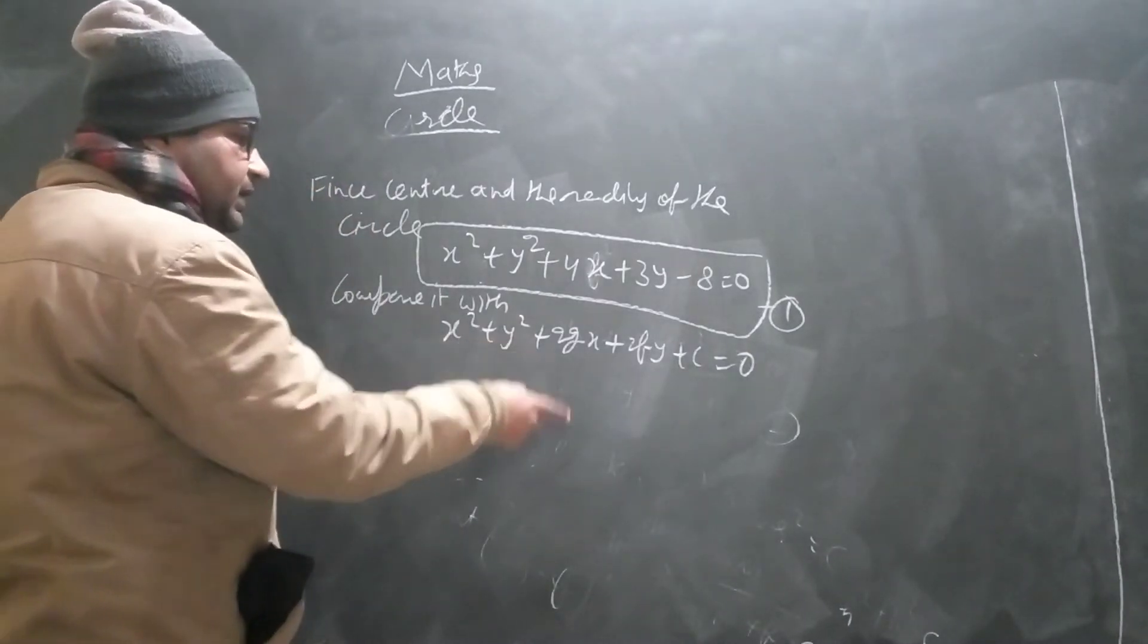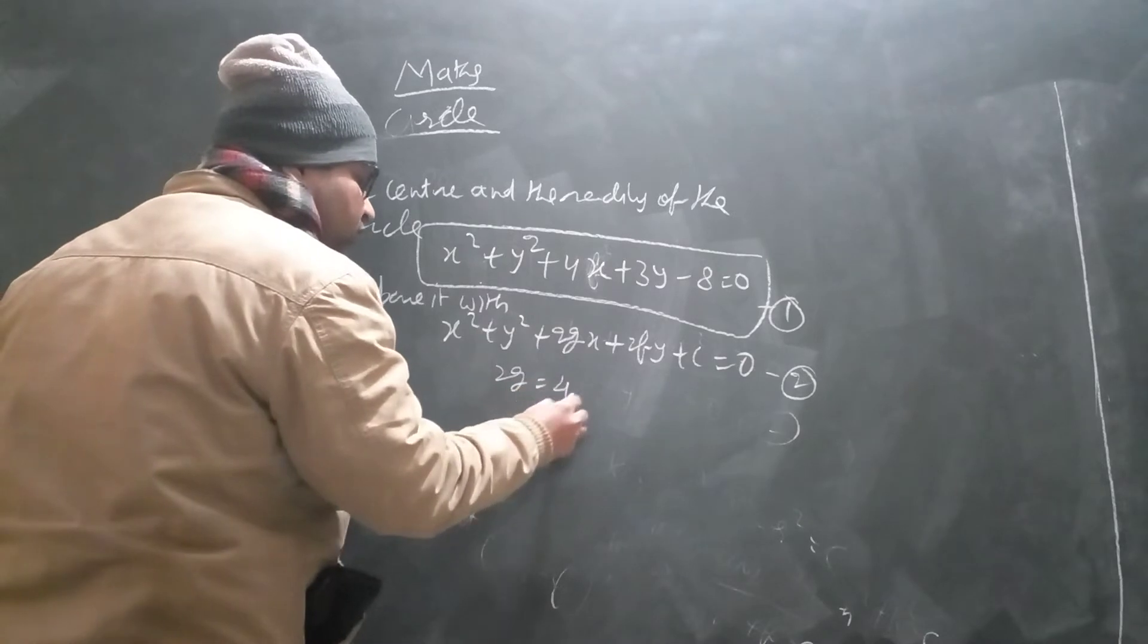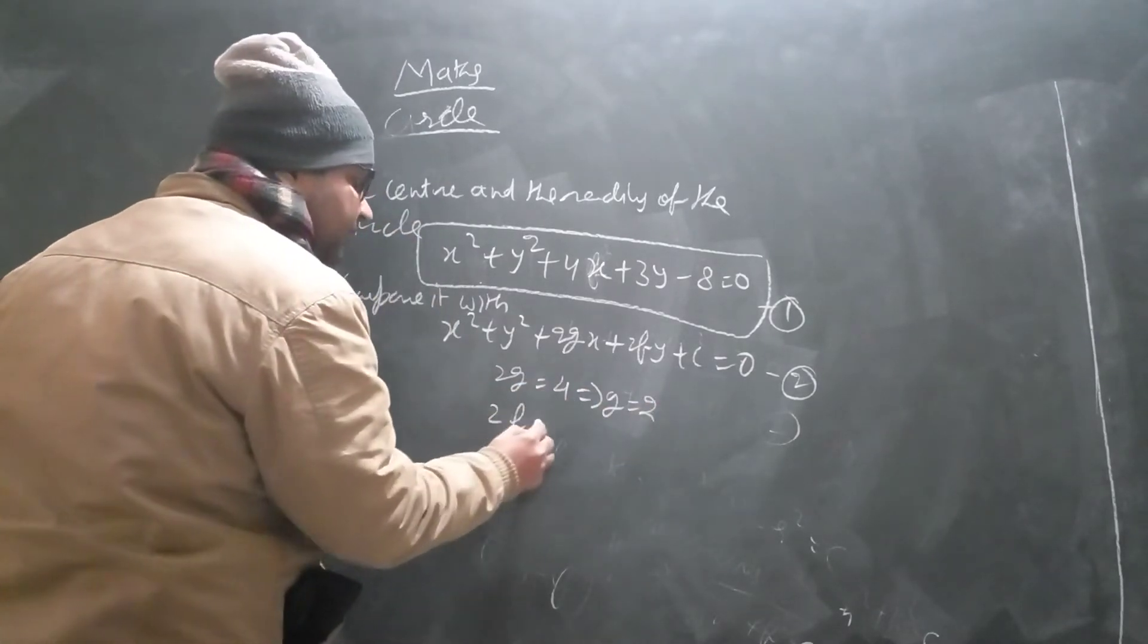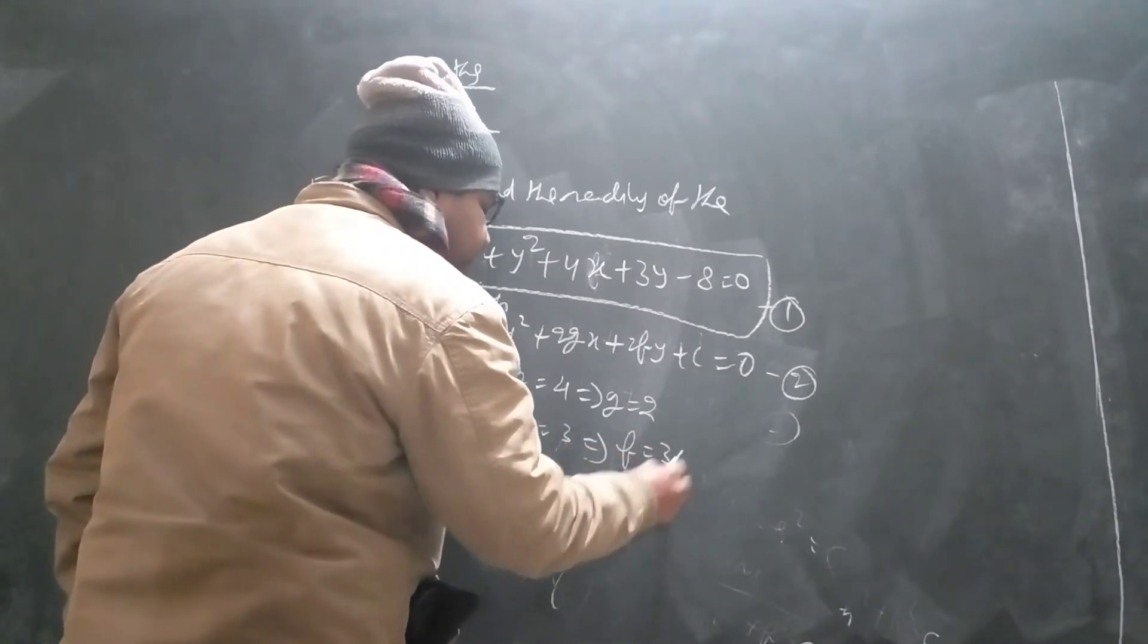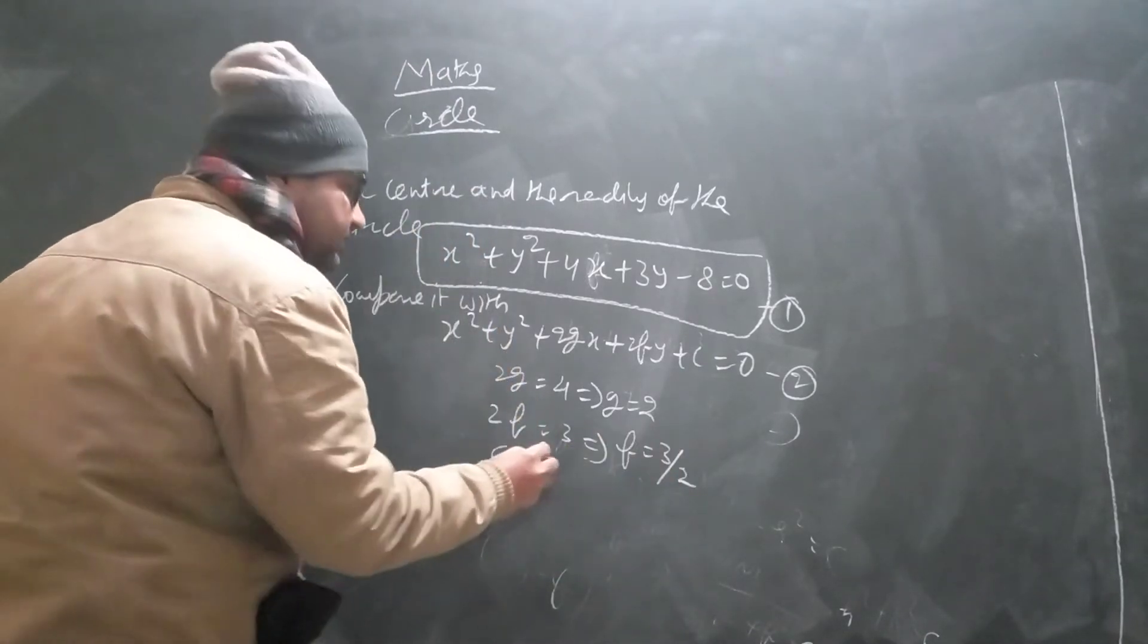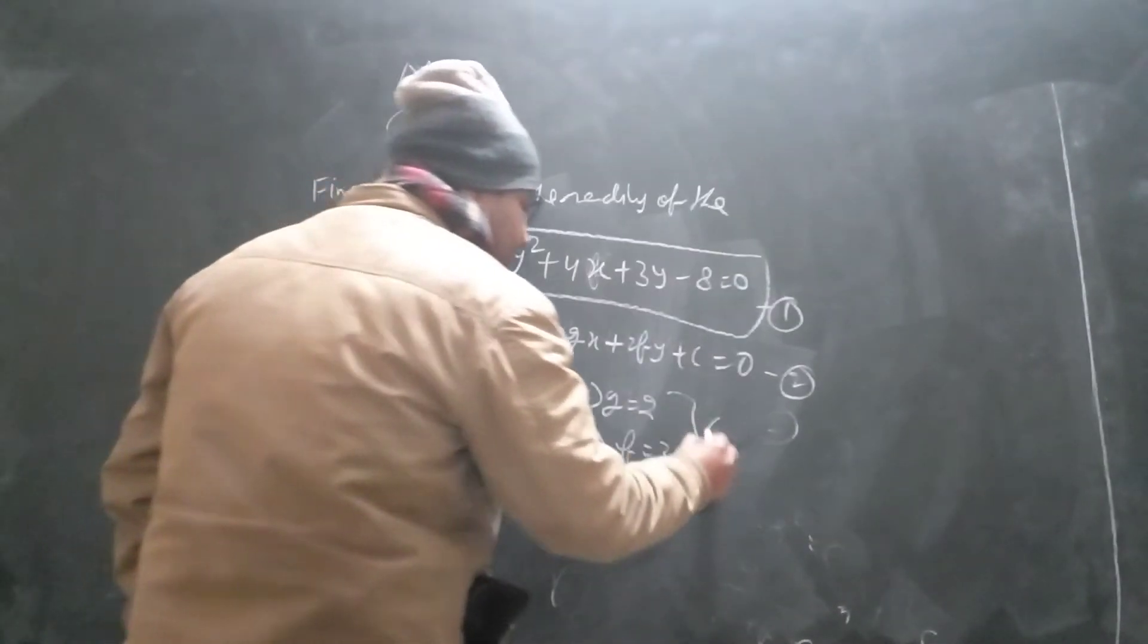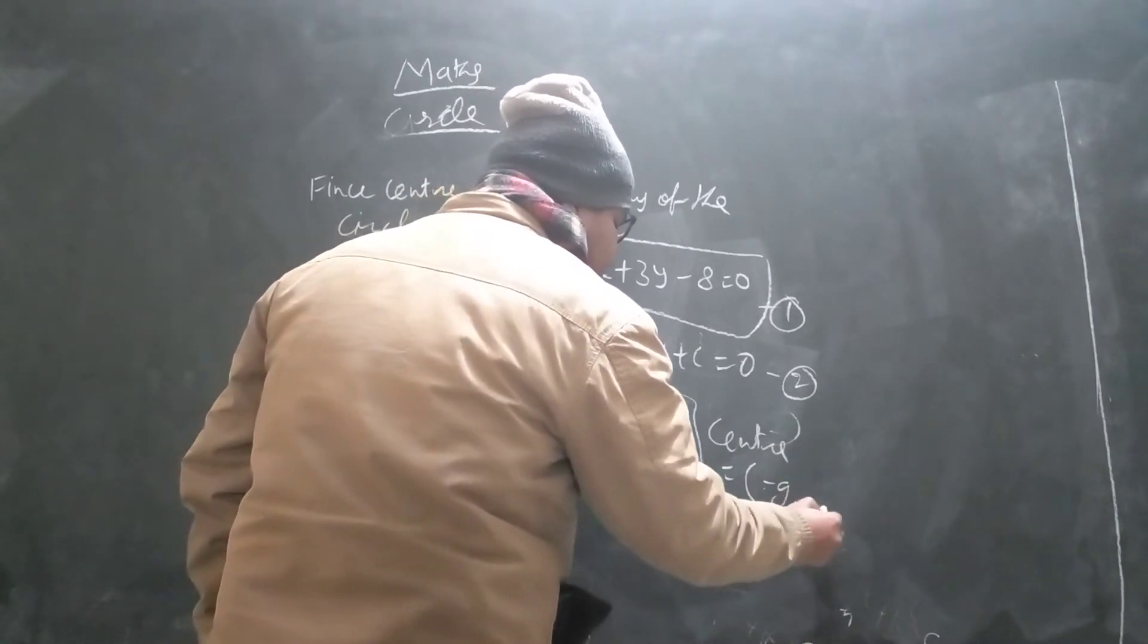Comparing with the general form, then we will find here 2G equal to 4, which will give us G to be 2. 2F equal to 3, that will give us F to be 3 by 2, and the constant term is minus 8. From these, we can get center, which is minus G, minus F.